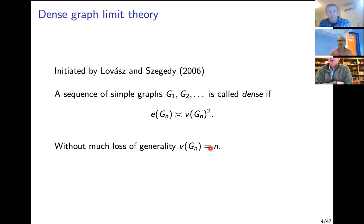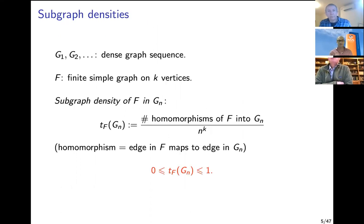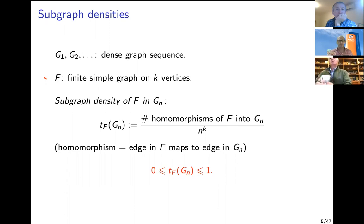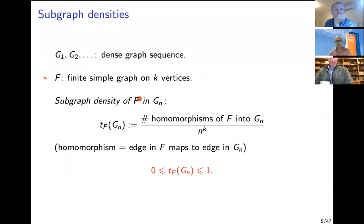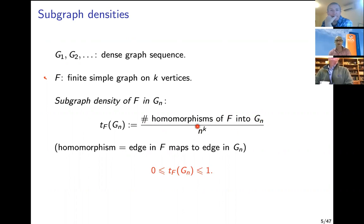We assume Gn has n vertices. One way to analyze dense graph sequences is through their subgraph densities — there are other equivalent ways in the dense world, but that's what we focus on here. Fix a finite simple graph F on k vertices — all graphs we consider are finite, simple (no loops, no multiple edges), and undirected. The subgraph density of F in Gn, denoted t_F(Gn), is defined as the number of homomorphisms from F into Gn divided by the maximal possible number of such homomorphisms, which is n^k.